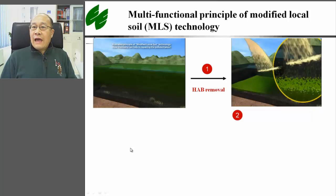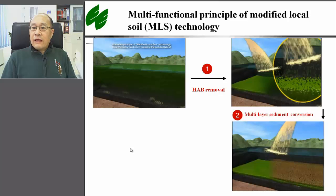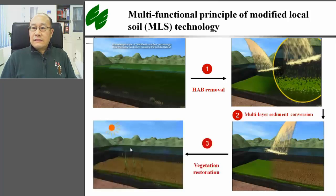The first function is algae removal. By spraying the soil suspension onto the plume, soil particles can flocculate and transfer the algae together with nutrients from the water to the sediment. Then, by applying MLS capping materials, the flocs can be buried into the sediment without getting back into the water. The capping layer also contains native macrophyte seeds, which can grow and utilize the nutrients that come from the decomposition of the buried algae flocs in the sediment in shallow water systems.